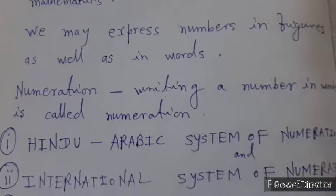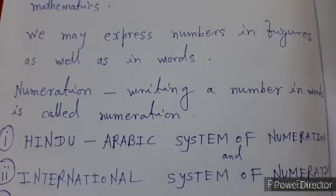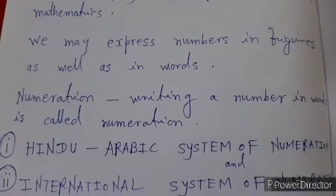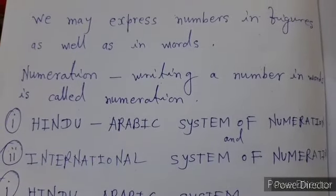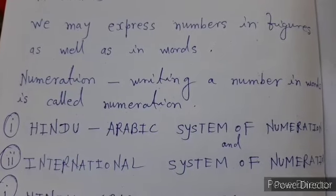What is numeration? Numeration means writing a number in words is called numeration. There are two types of numeration: Hindu-Arabic system of numeration and international system of numeration.